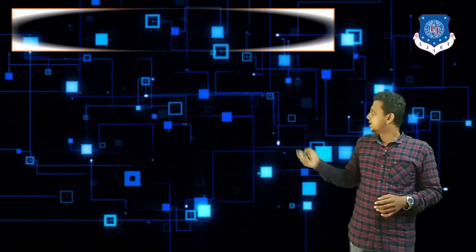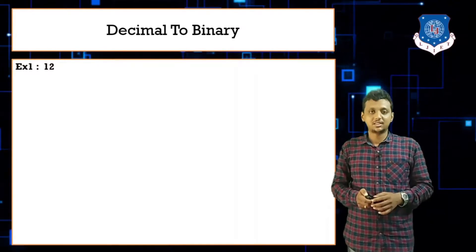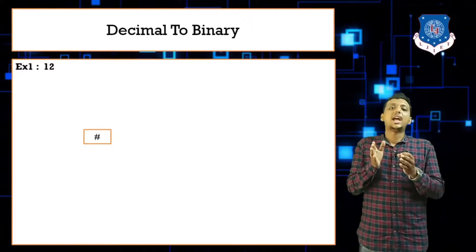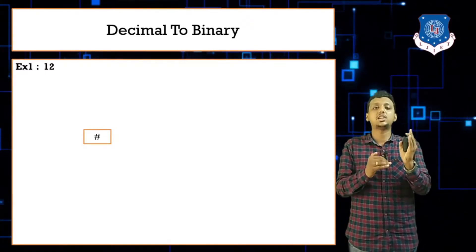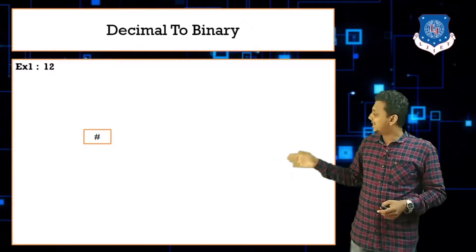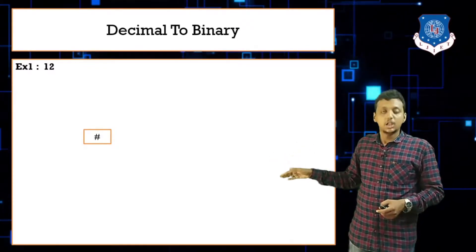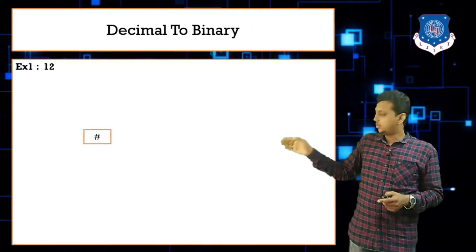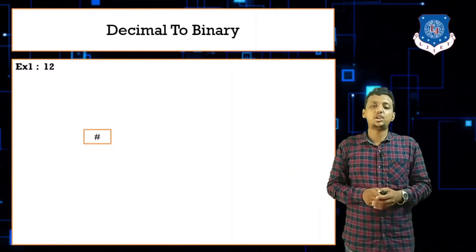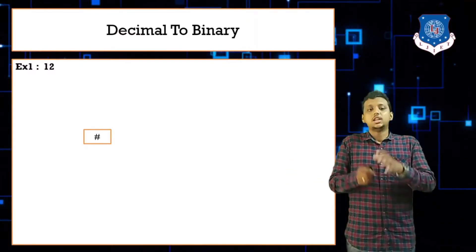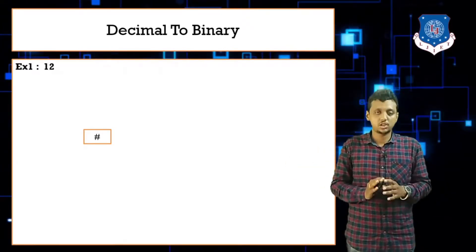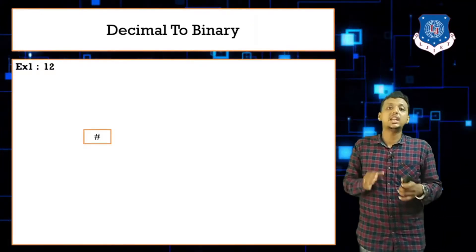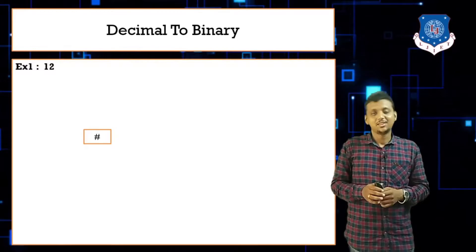Let's take the number 12 as our first example. First, initialize the stack with hash — hash shows the starting point of the stack. Whenever I try to take out numbers from the stack, whenever I get hash I stop the operation. We already did this in the infix expression algorithm where we initialized the stack with hash.